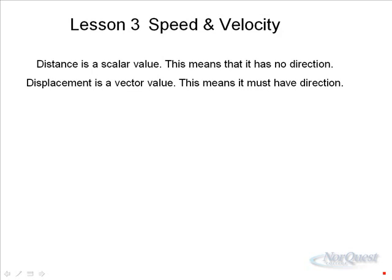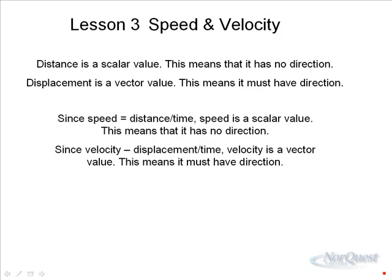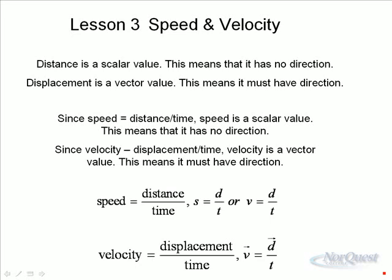Since speed equals distance over time, then speed is a scalar value as well. So speed and distance are scalars, whereas velocity and displacement are vectors. Velocity is a vector. That means it must have direction. Notice for speed, distance over time, velocity, displacement over time. Now you understand what the arrows are all about.